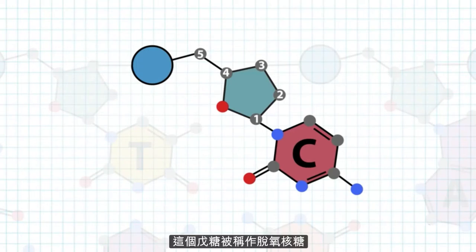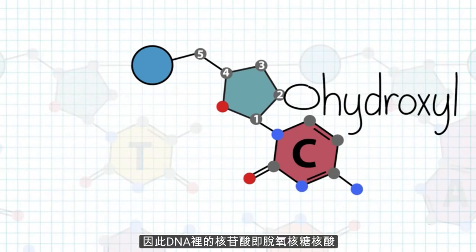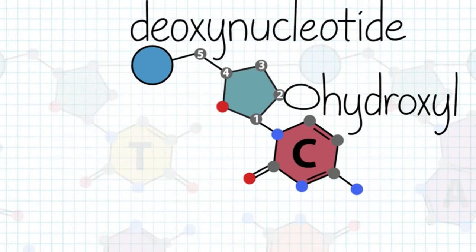The sugar is called deoxyribose because it is missing a hydroxyl group at the 2' carbon, which is present in ribose. Because of this, nucleotides in DNA, deoxyribonucleic acid, are called deoxynucleotides.